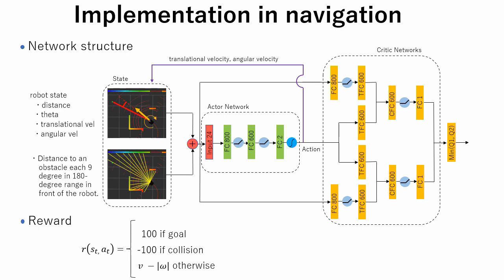The policy gets reward of 100 if the robot reaches the goal and gets minus 100 reward if collision happens. Also, each time step, the robot gets reward which is the difference between translational velocity and angular velocity. This reward is applied to make the robot move forward as much as possible.